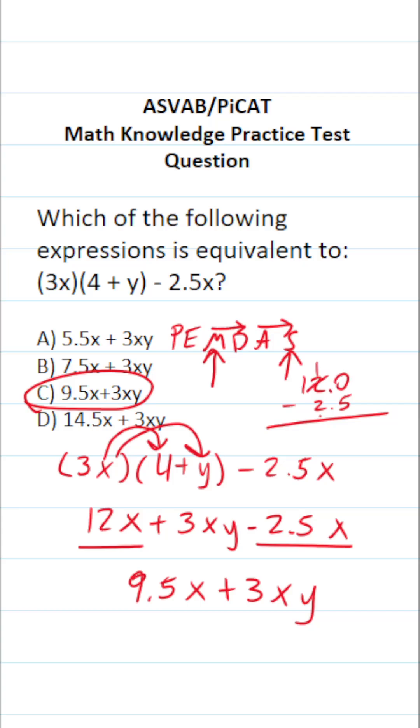We can't do 0 minus 5 so we have to borrow. This becomes 1, this becomes 10. 10 minus 5 is 5. Drop down our decimal. 1 minus 2 we can't do so we're going to borrow. This becomes 0, this becomes 11. 11 minus 2 is 9.